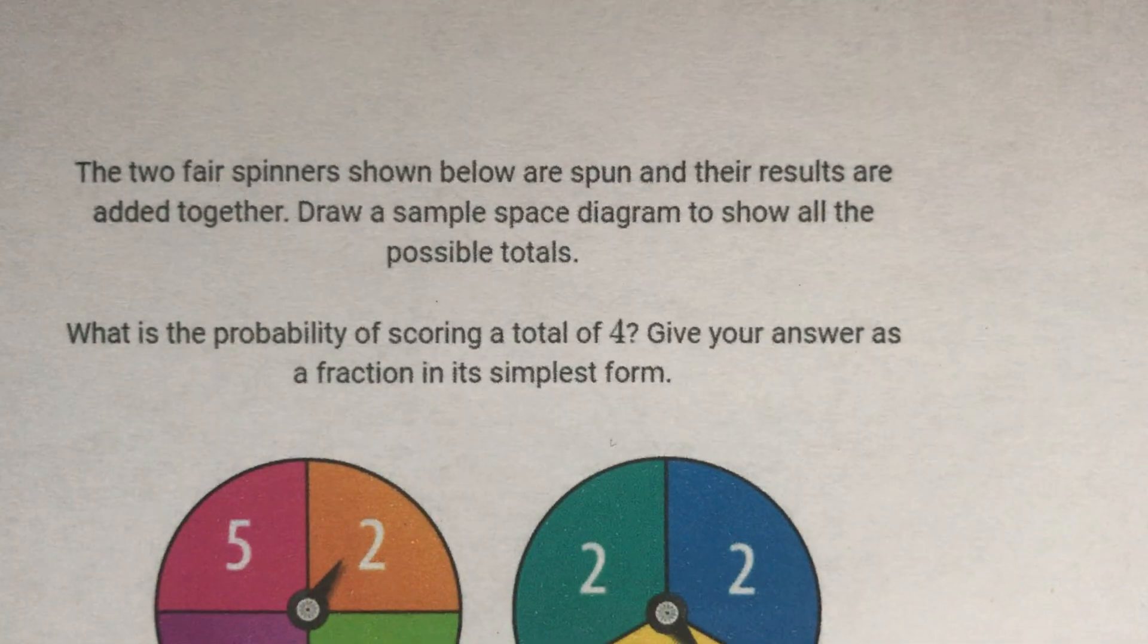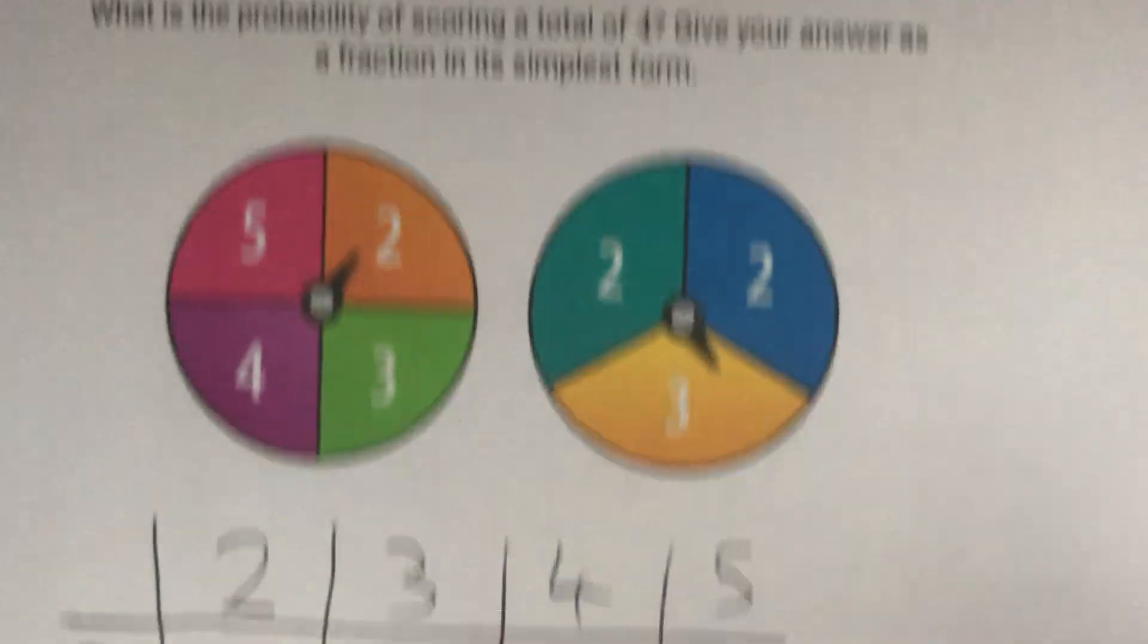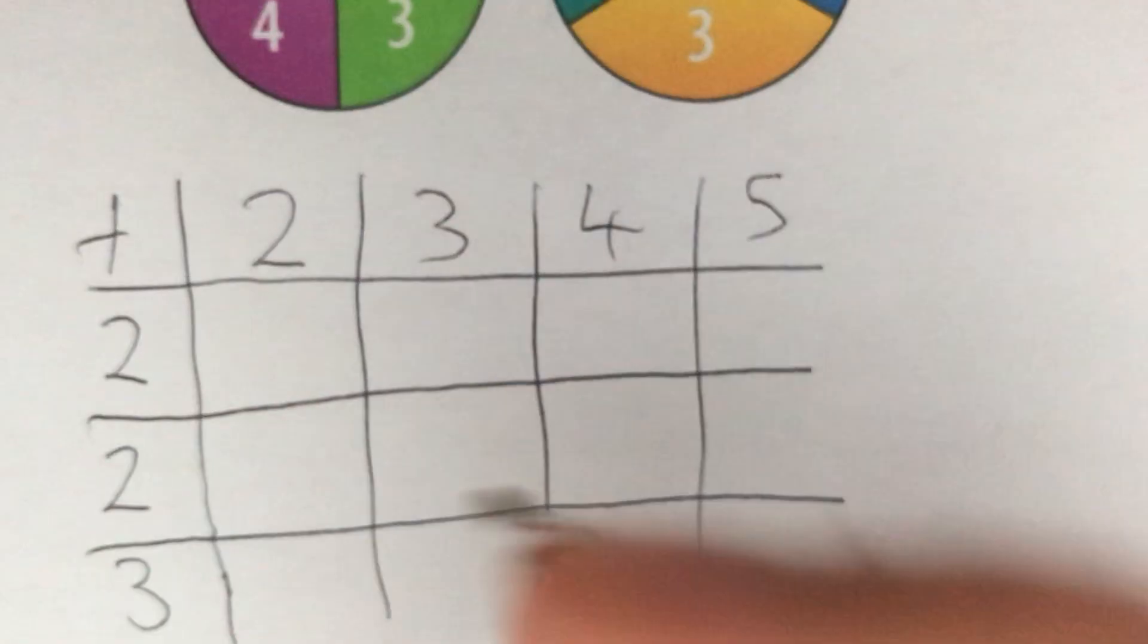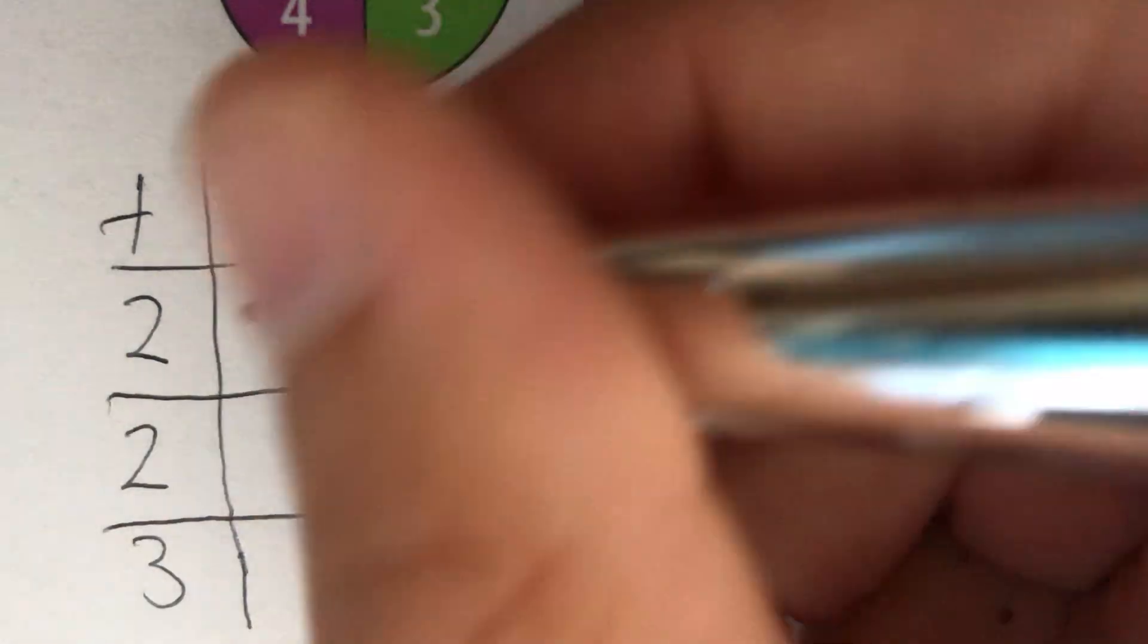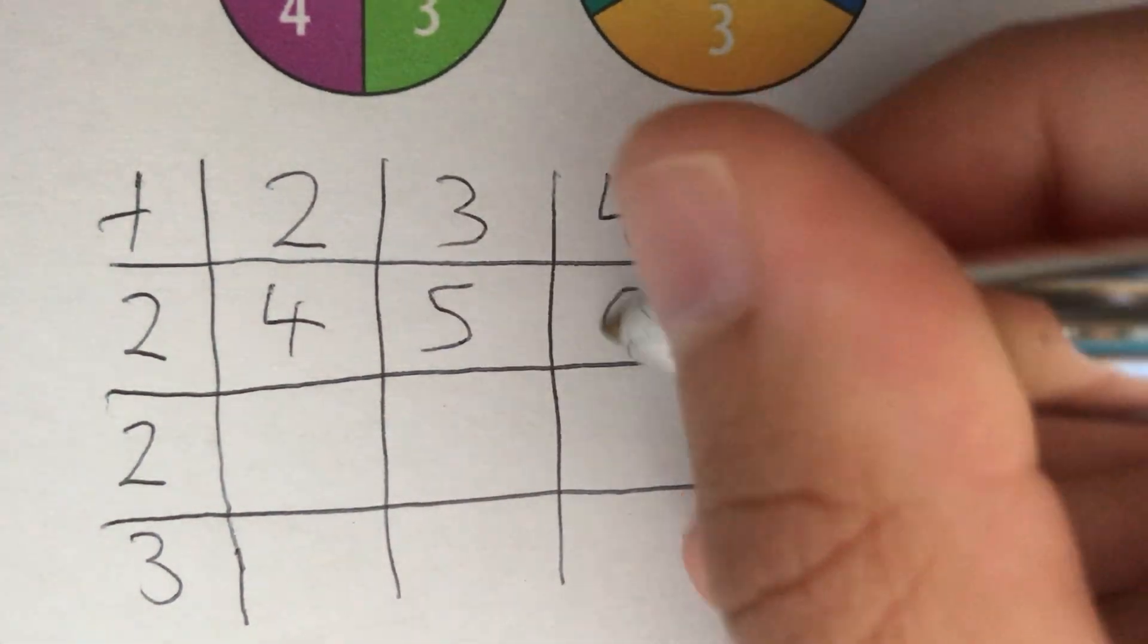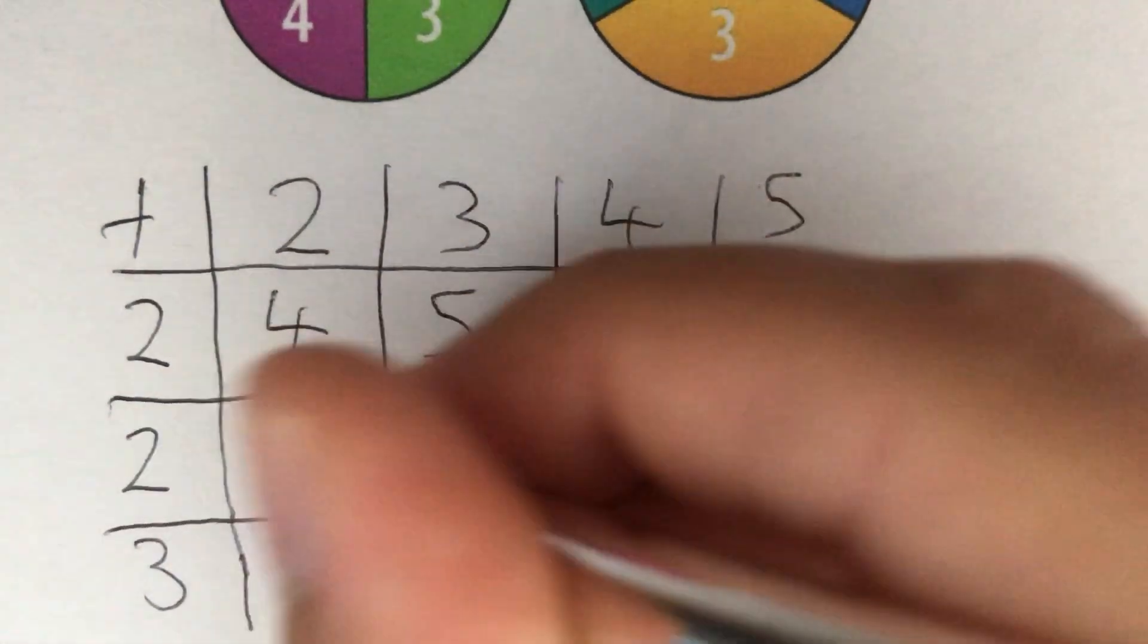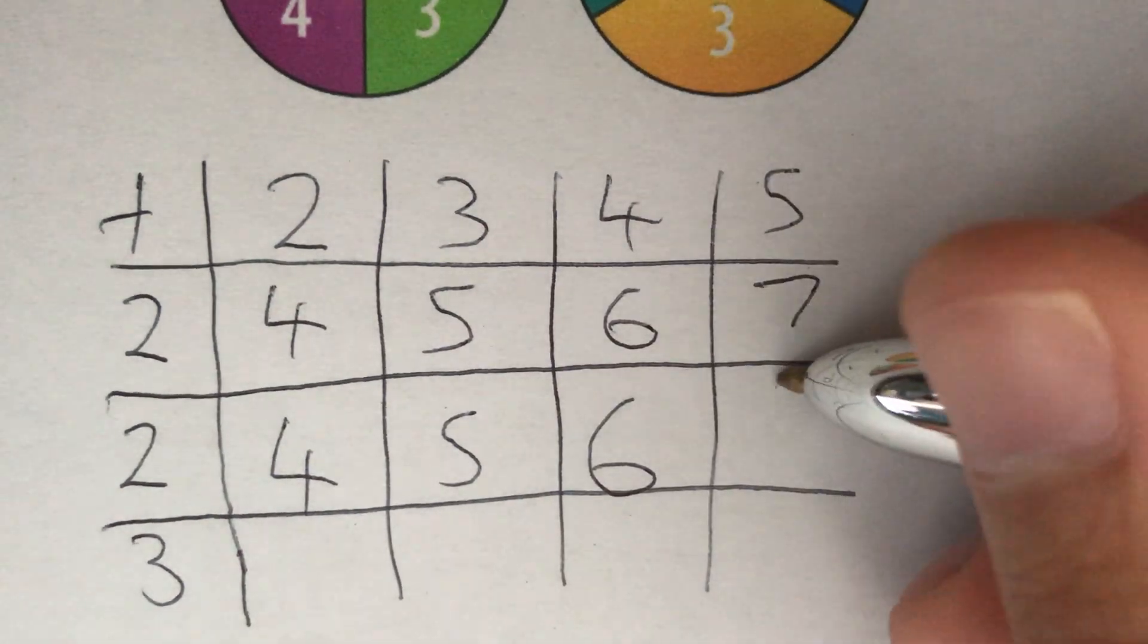We're told in the question that after we spin the two spinners, their results are added together. So we need to add each of our results together. If we've got a 2 on the first one, a 2 on the second one, we get a total of 4. A 3 and a 2, we get 5, 6, 7. Then a 2 and a 2 again, we get 4, 5, 6 and 7.